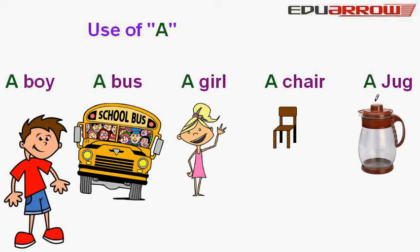And lastly, a jug — we add A before 'jug' because J is a consonant.